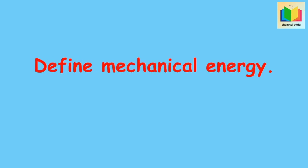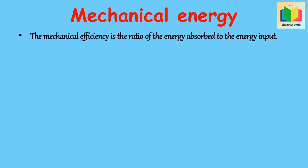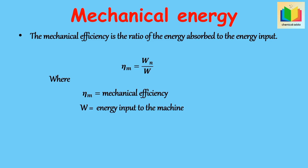Define mechanical efficiency. Mechanical efficiency is the ratio of the energy absorbed to the energy input. The formula is: ηm = Wn / W, where ηm is mechanical efficiency, W is energy input to the machine, and Wn is the energy absorbed by the solid.